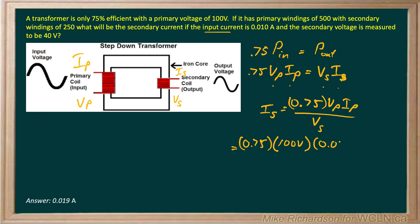So 0.010 amps, all divided by the actual secondary voltage, which is 40 volts.